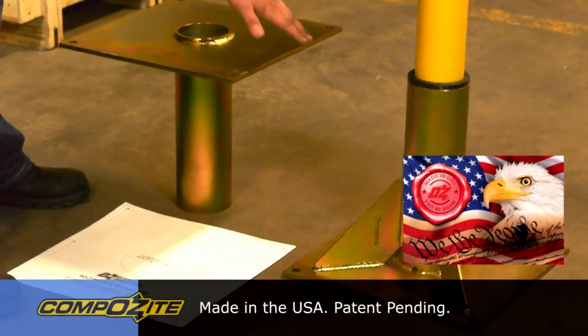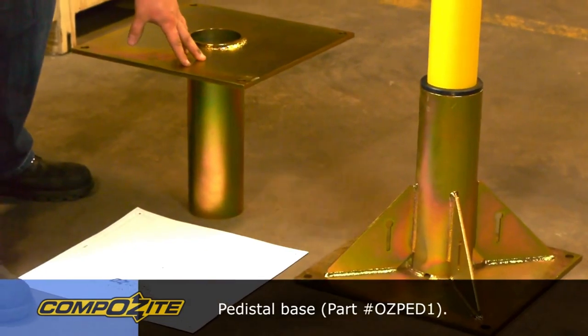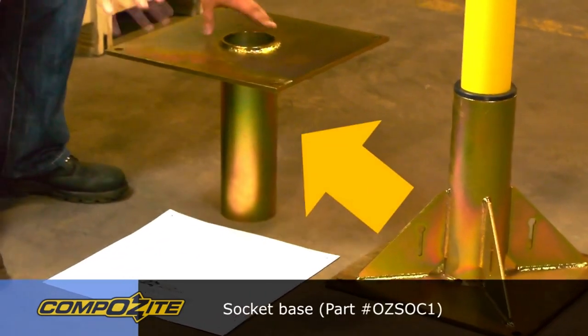Go through the differences in the two bases that we have here. Here we see a pedestal base. It's a flush mount style base that sits above the floor, and here's our socket mounted base.